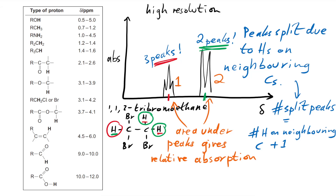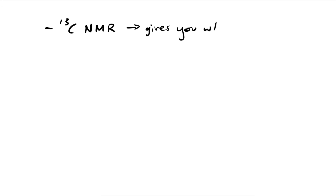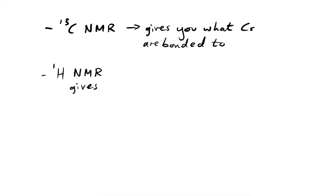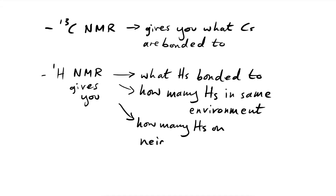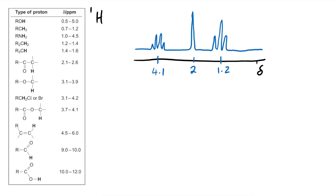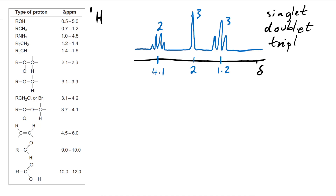You'll usually be given the area, which is typically given by a number on top of the peak. We can bring together all of these ideas to determine what's in a molecule: carbon-13 NMR tells you what is bonded to carbons; proton NMR gives you what the hydrogens are bonded to, how many hydrogens are in the same environment, and how many hydrogens are on neighbouring carbons via the split peaks. Let's say we have a proton NMR spectrum with areas under the peaks, and the peaks are: a singlet, a doublet, a triplet, and a quartet. The molecular formula is C4H8O2.